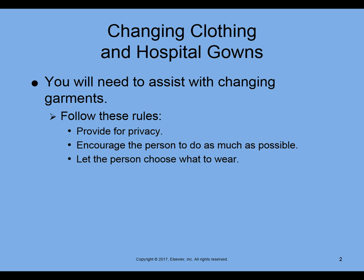Let the person choose what they want to wear. For the essential skill we're going to be doing — which is number five, changing and dressing a resident who has a weak arm — one of the things the examiner is going to look for is that you provide two outfits for the patient to choose from. That emphasizes making sure patients have choices, and it's included in the steps of the skill as well.